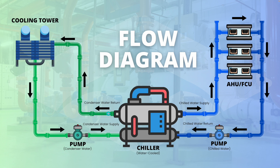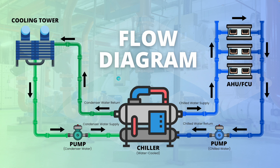On the condenser water side, the chiller performs its refrigeration process to transfer heat from the chilled water to the condenser water. The condenser water is heated up and leaves the chiller at about 35 degrees Celsius. It then goes to the cooling tower, which sprays it down and brings in ambient air to cool it. The cooled condenser water returns to the chiller at about 30 degrees Celsius — another 5-degree temperature difference. This is how the four components work and how the chilled water system basically operates.